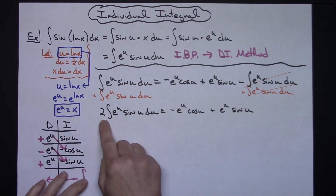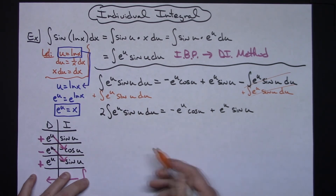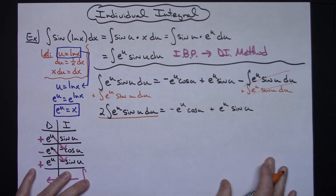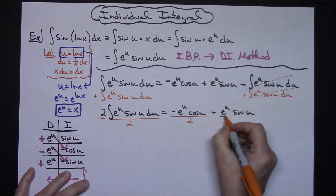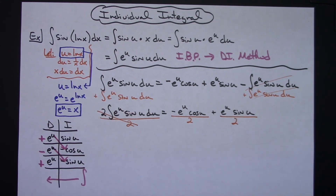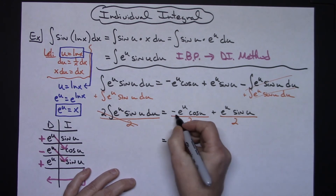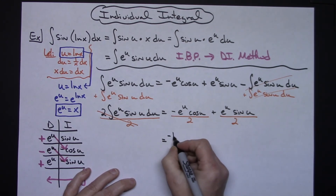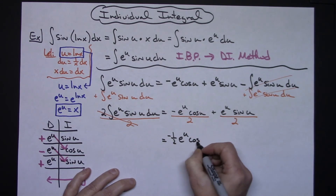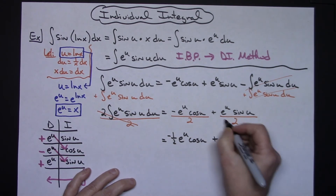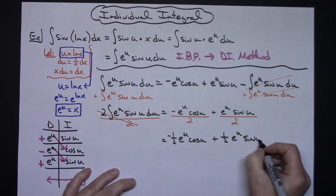Now I'm solving for the integral, so I don't want that 2 out front — I'm going to divide everything by 2. The 2's cancel on the left, and I pull out the one-half on the right. That gives me negative one-half e to the u cosine(u) plus one-half e to the u sine(u).